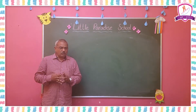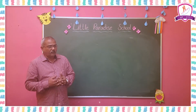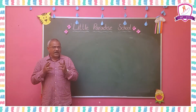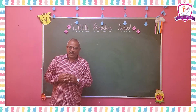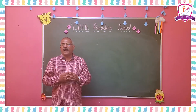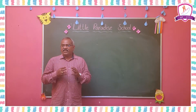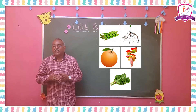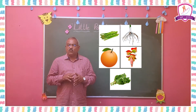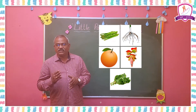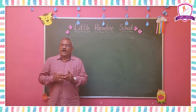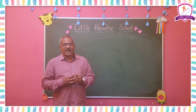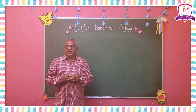Plants and animals are two main sources of food. We get food from plants in the form of roots, stems, leaves, flowers, and fruits. All green plants are called producers, as they produce their own food.